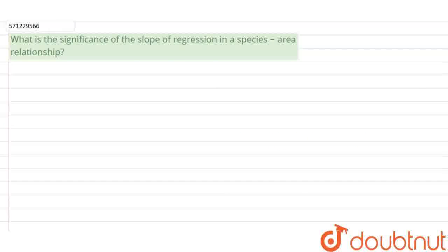In this question we are being asked the significance of the slope of regression in a species area relationship. So first of all, let's try to find out what a species area relationship is. We know that very rich biodiversity or a very high level of species richness is found in our biosphere on our earth.